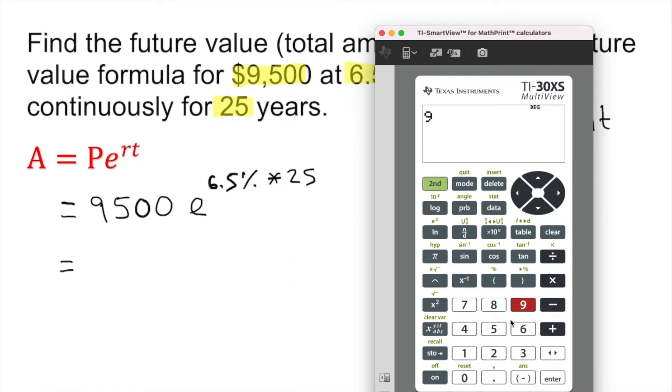I can just plug in 9500 and I need e, so multiply. Second LN is going to give the e, natural log e, natural base e. So e to the power—e is approximately 2.71828. So 6.5%, second open parenthesis, this is times 25.